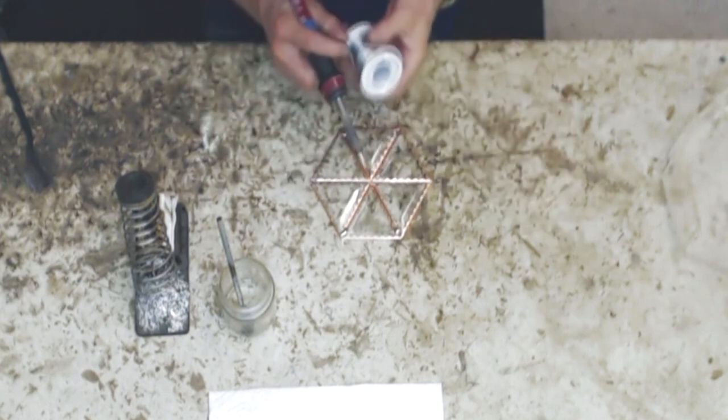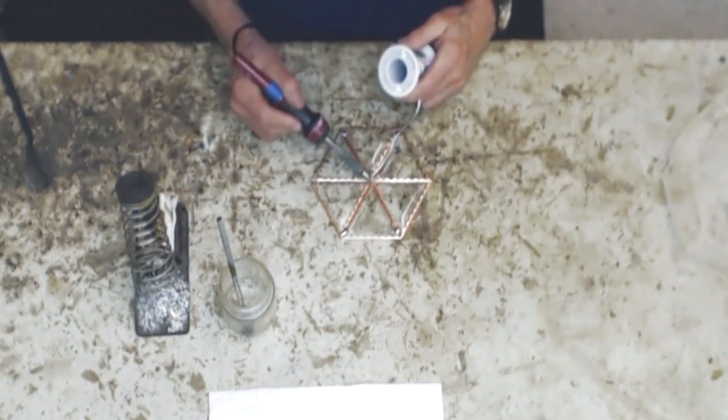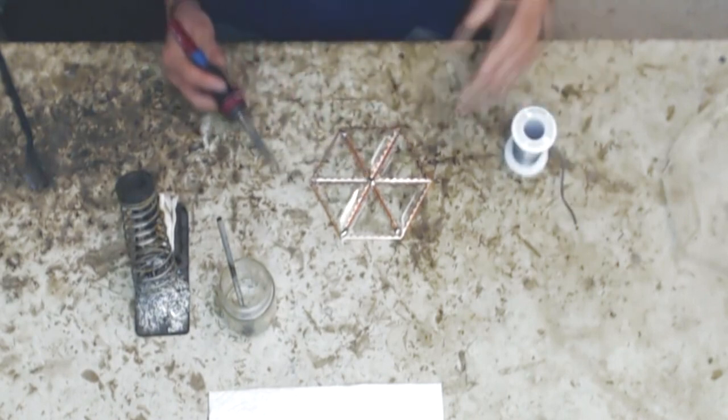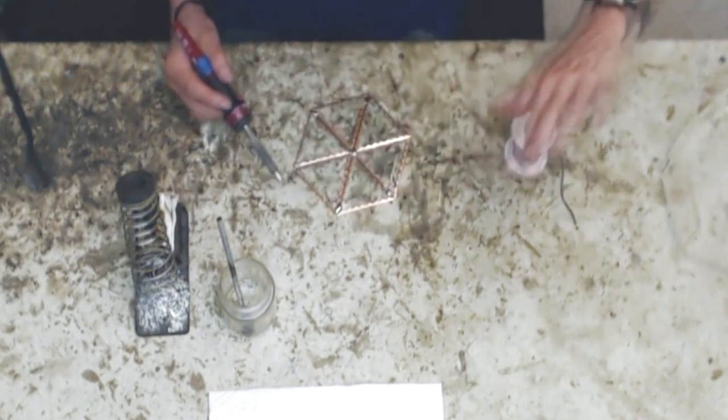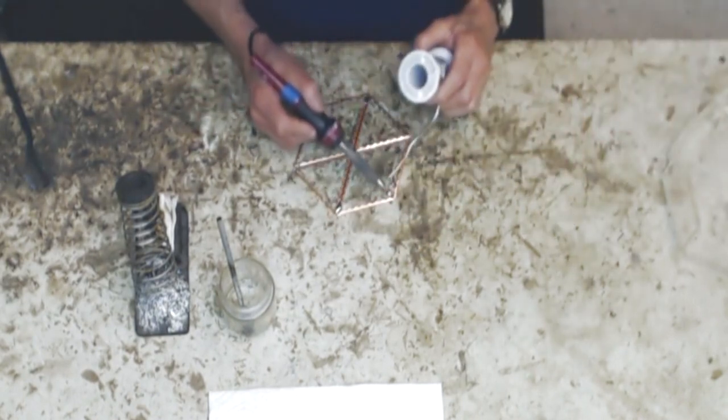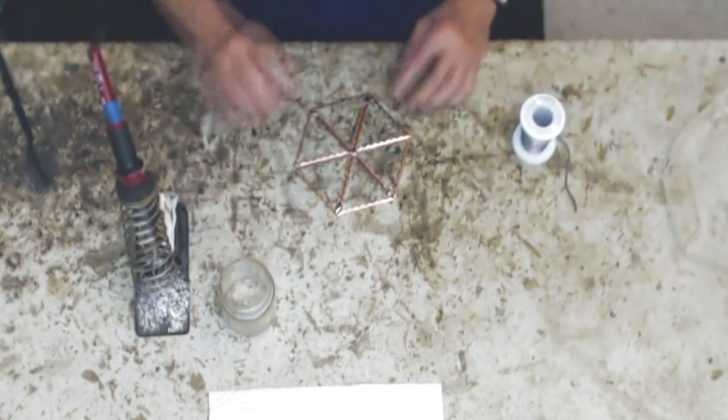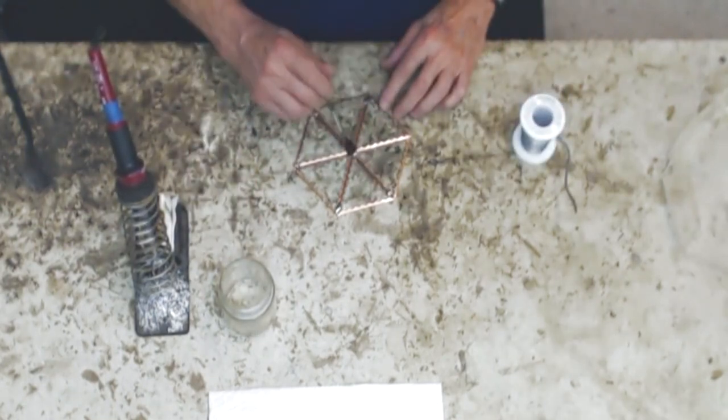Once that's all tacked, I'll put a tack in the middle and then I can run my bead. Now with decorative foil it's a little bit different because it has that wave to it, so just take your time.